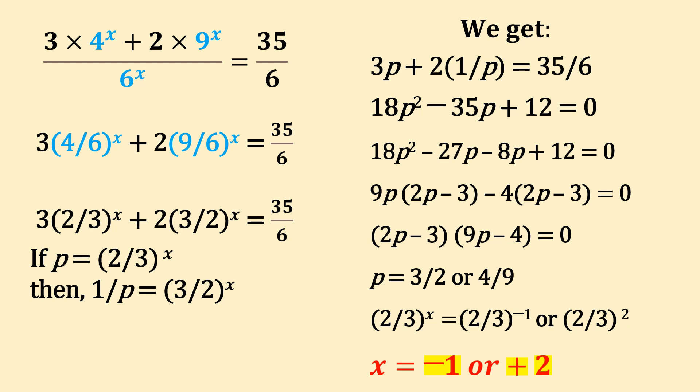So we get 3p plus twice 1 by p equal to 35 by 6, or 3p plus 2 by p equal to 35 by 6. Multiply by 6p, this will clear all fractions. We get 18p squared minus 35p plus 12 is equal to 0.